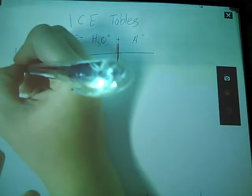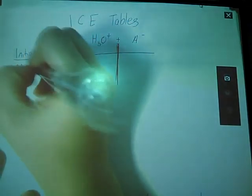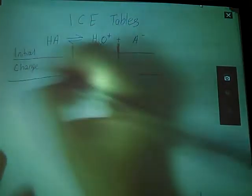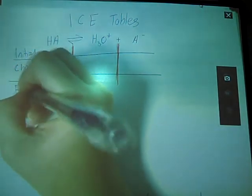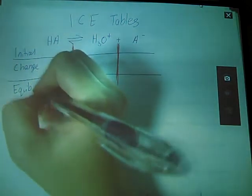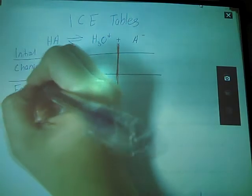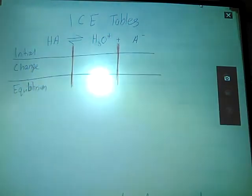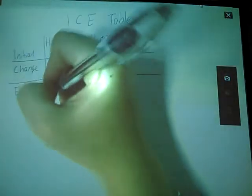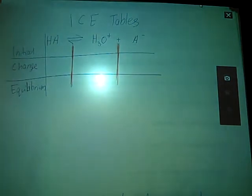C for change, and E for equilibrium. And we're going to try to figure out the concentrations of all of these different boxes, what goes in there.